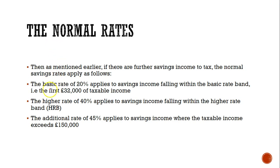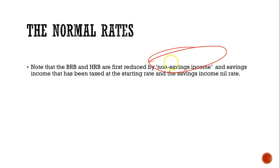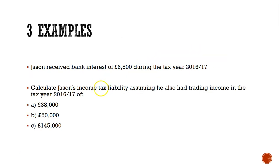Once you add all three together in the total column, you can determine what band the person is in. After the starting rate and the savings nil rate band, we move on to discuss the actual rates at which tax is paid. Remember that these are top slices, so you must deal with non-savings income first. When you've dealt with non-savings, you can then go ahead and tax savings income.